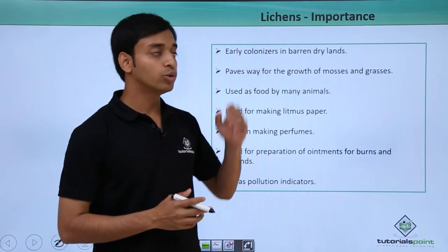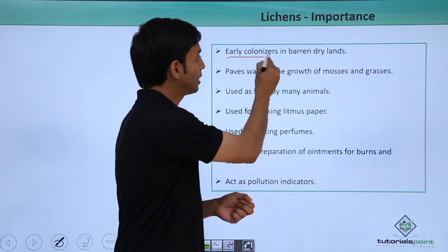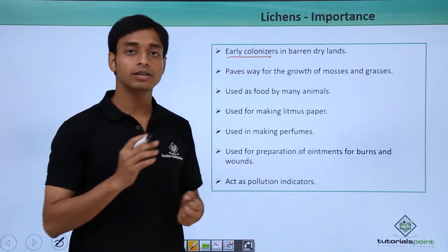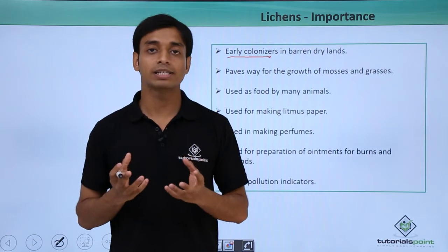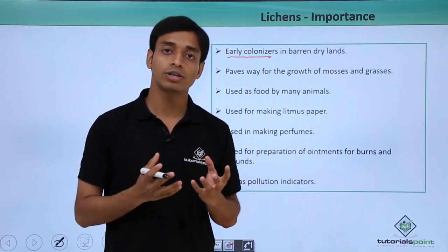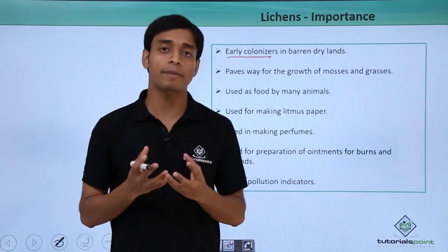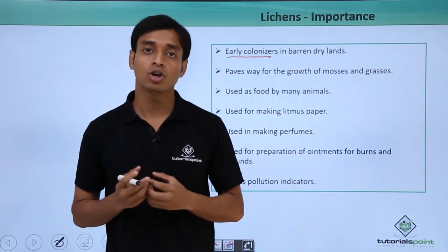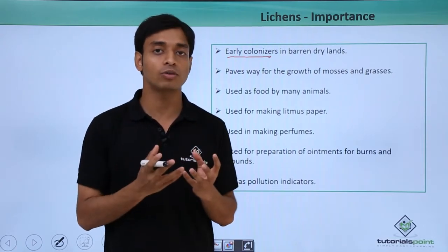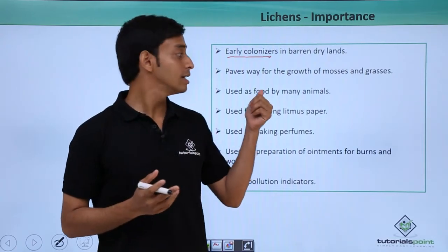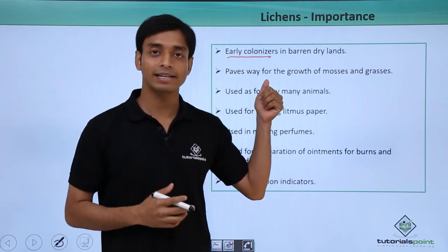We know that lichens are one of the early colonizers in the barren lands, or lands where most of the organisms are not found, which are not inhabitable — where certain organisms, plants, and animal species are not found. These are early colonizers in these types of barren lands.